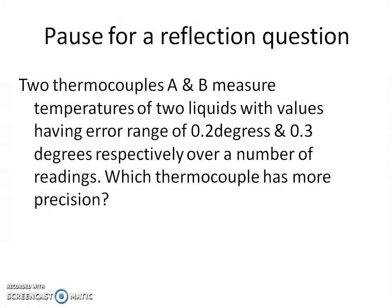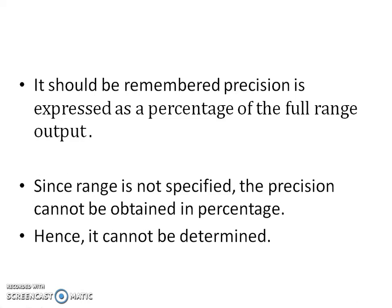Now, pause for a reflection question. Two thermocouples A and B measure temperatures of two liquids with values having error ranges of 0.2 degrees and 0.3 degrees respectively over a number of readings. Which thermocouple has more precision? It should be remembered that precision is expressed as a percentage of the full range output. Since range is not specified, the precision could not be obtained in percentage. Hence, the best precision of the two cannot be determined.